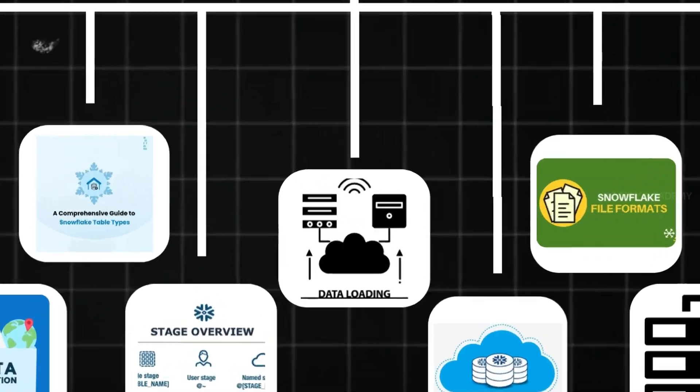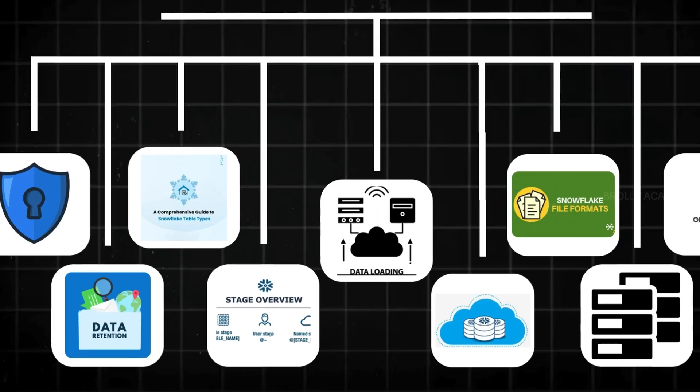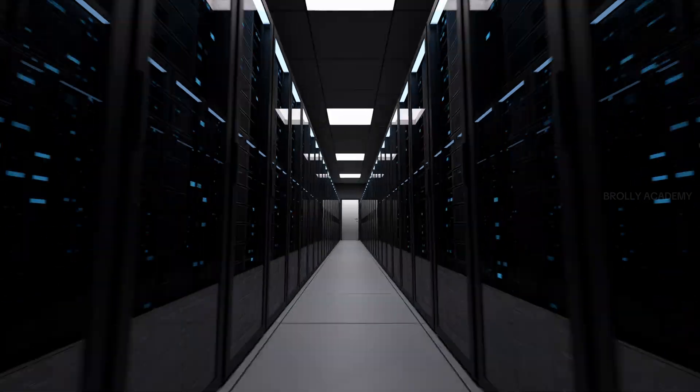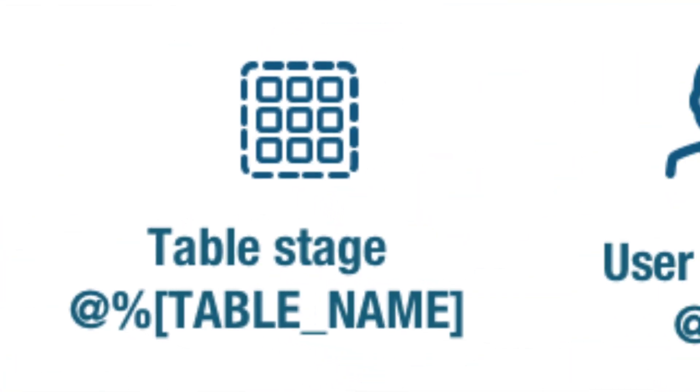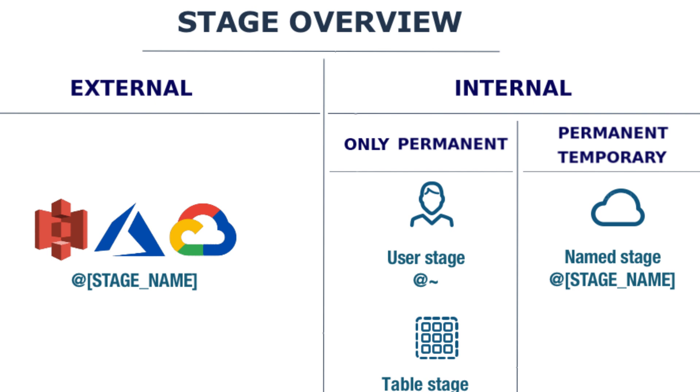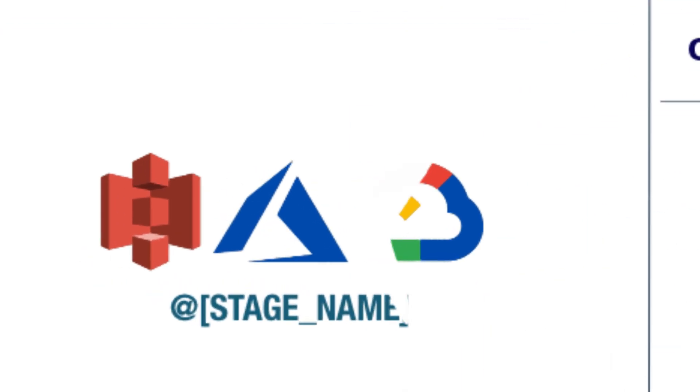Data Loading and Staging is the first step of data management. Data loading in Snowflake has three major ways: manual load via Web UI, using the COPY INTO command, and using Snowpipe for automated loads. Staging is like an intermediate area — a temporary place. Snowflake has three types of stages: User Stage, Table Stage, and Internal or External Stage like S3 or Azure Data Lake.